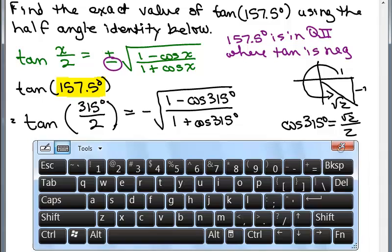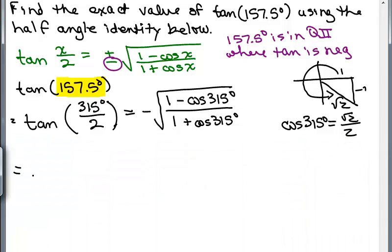So now we keep going. We've got the minus sign, don't forget the minus sign. You've got the big square root sign, don't forget that. So we have 1 minus what the cosine of 315 degrees is, square root of 2 over 2, over 1 plus the cosine of 315 degrees which is square root of 2 over 2.